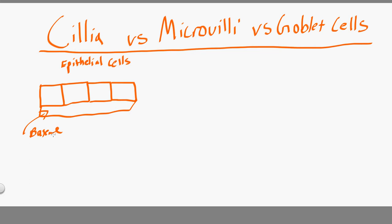If we take a couple of these epithelial cells and zoom in, of course epithelial cells are not shaped like these little squares. But if you zoom in at the apical layer — the top layer of the epithelial cells — it looks kind of wavy.